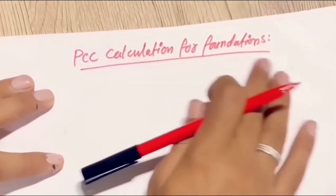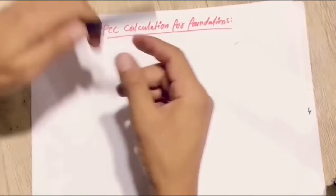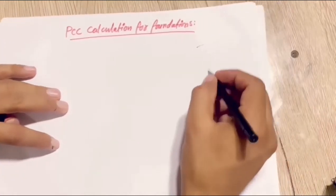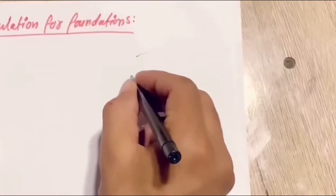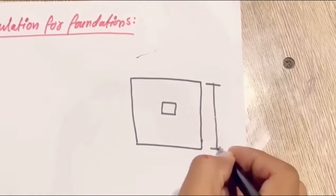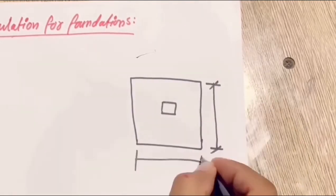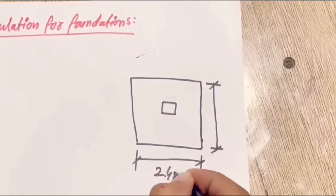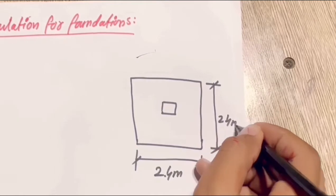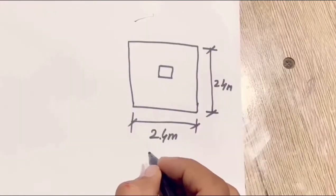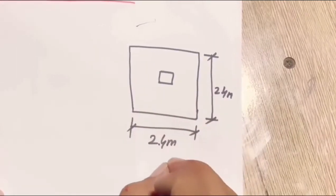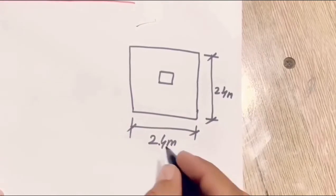PCC calculation for foundations. We know from the drawing the footing size is 2.4 meters on one side and also 2.4 meters on the other side. The PCC that we provide under the foundations — the height of the PCC will be 10 centimeters.